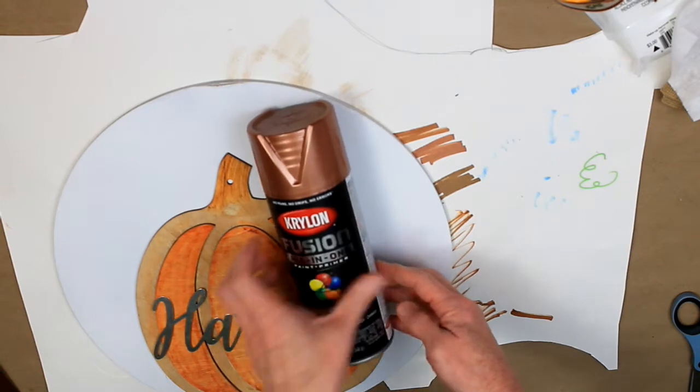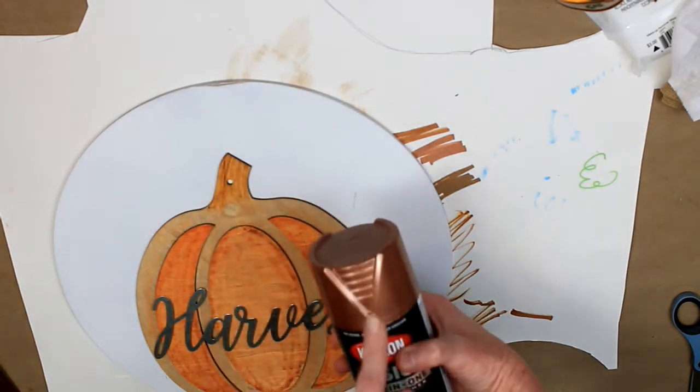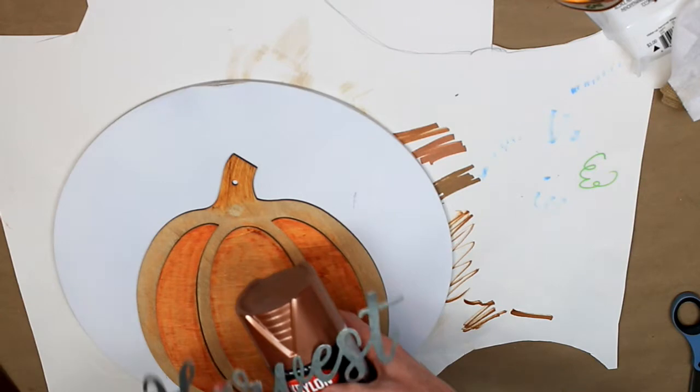I'm going to take this Krylon metallic copper spray paint and go outside and spray paint this harvest metal sign.